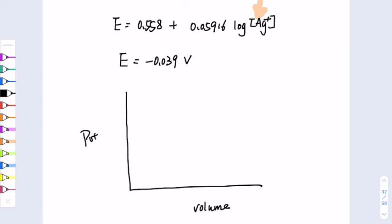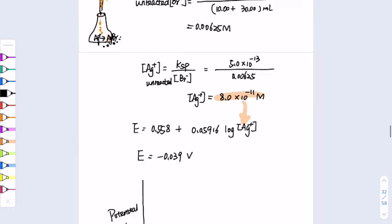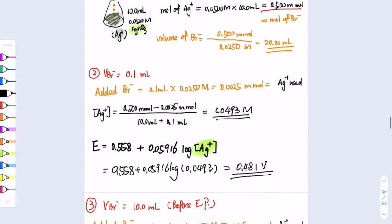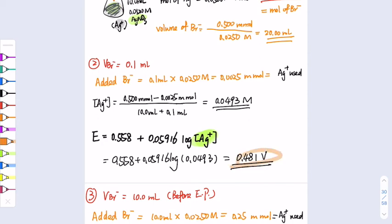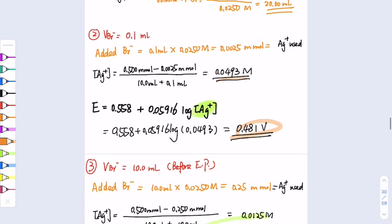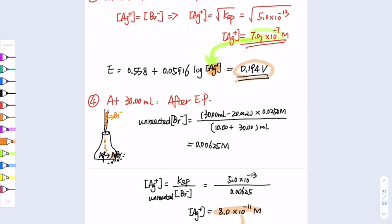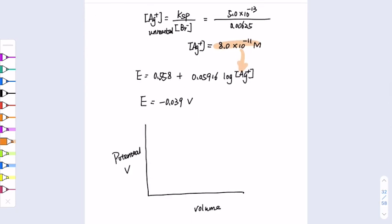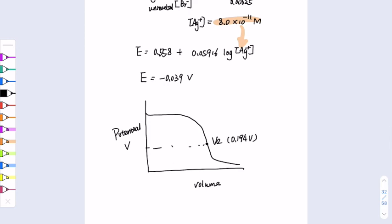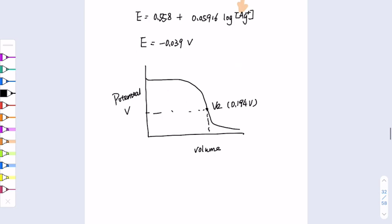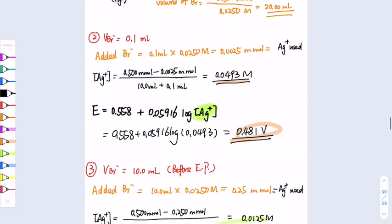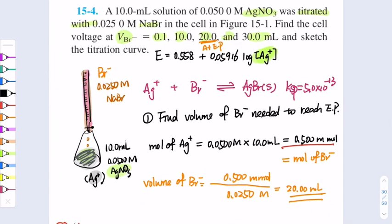Now we can draw the titration curve with volume on the x-axis and potential on the y-axis. The values are: 0.481 V at 0.1 mL, 0.445 V at 10 mL, 0.194 V at the equivalence point (20 mL), and −0.039 V at 30 mL. The curve drops sharply at the equivalence point. Label your equivalence point potential Ve = 0.194 V at volume = 20 mL. This completes the second situation where silver ion in the flask is titrated with bromide ion.